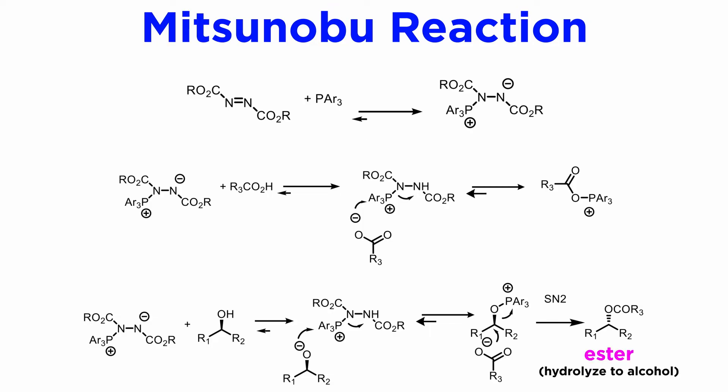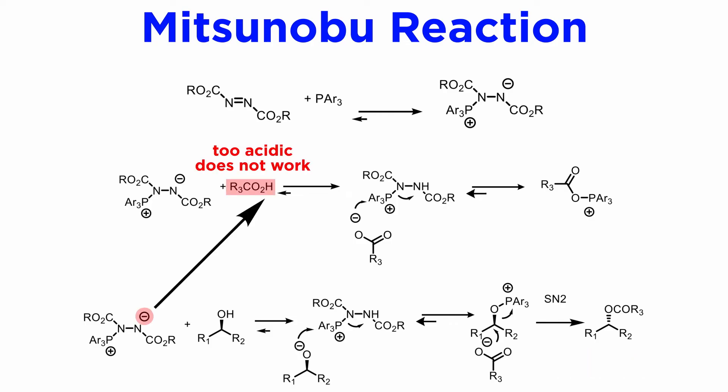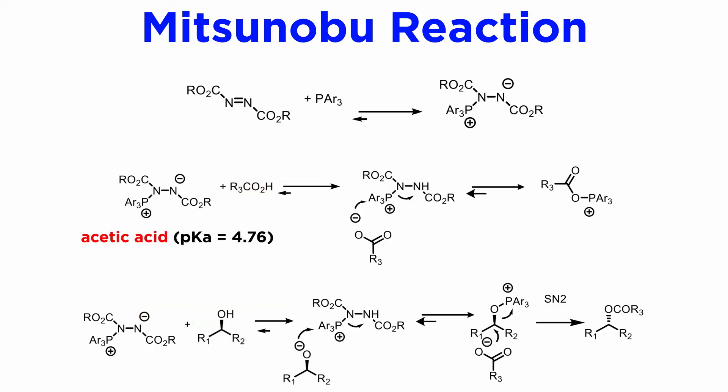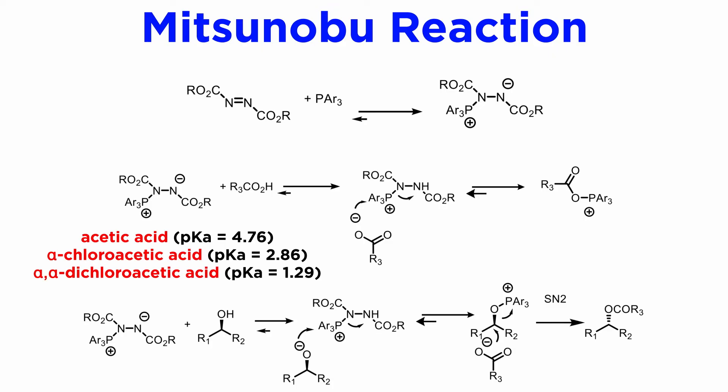The enantiomeric alcohol can then be obtained by simple ester hydrolysis. Consistent with this mechanism, carboxylic acids that are too acidic do not work well, as their conjugate base is too weak to deprotonate the alcohol appreciably. Thus in a model system, acetic acid with a pKa of 4.76 reacts 100 times faster than alpha-chloroacetic acid with a pKa of 2.86, which reacts 200 times faster than alpha-alpha-dichloroacetic acid with a pKa of 1.29.